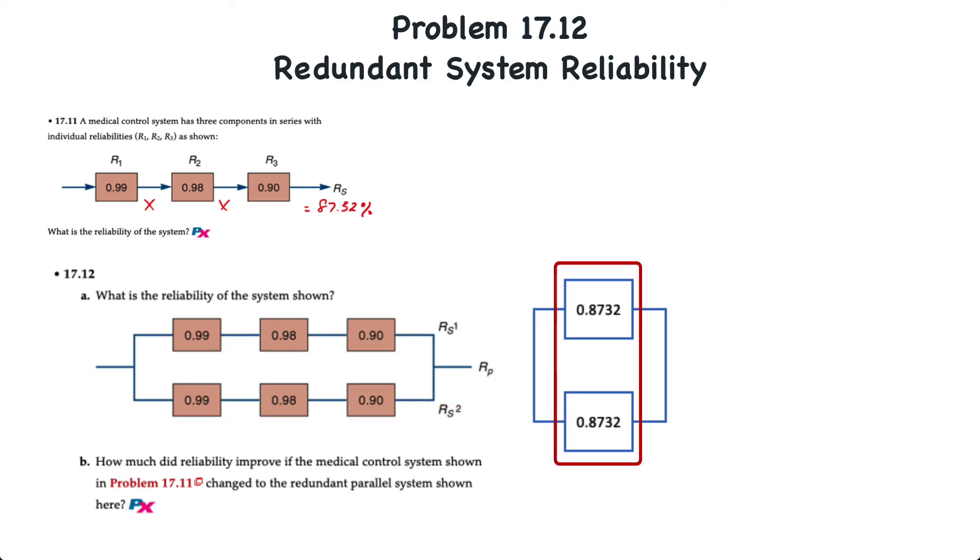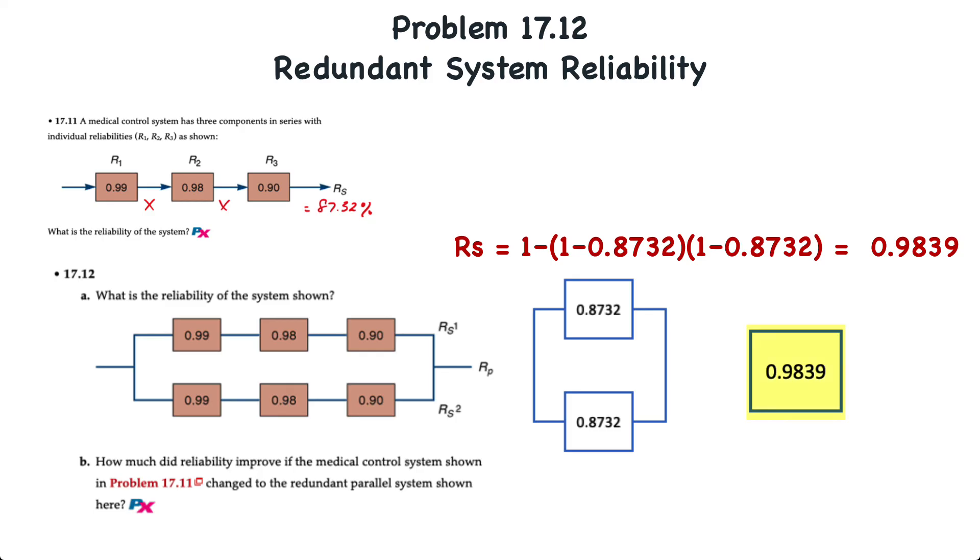Now, we're left with two subsystems in parallel. And then to determine the reliability of the system, we take one minus the unreliable portion of each of those subsystems multiplied together. So, 1 minus 1 minus 87.32% times 1 minus 87.32% results in an overall system reliability of 98.39%.